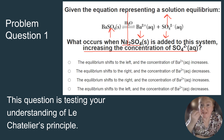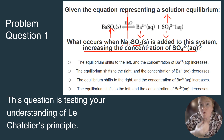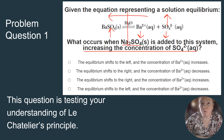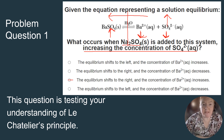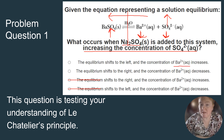The equilibrium will shift toward the side where concentration is increasing — to the left. When the equilibrium shifts left, it uses up SO4²⁻ and Ba²⁺ and produces BaSO4. That means the concentration of Ba²⁺ (aq) is decreasing.